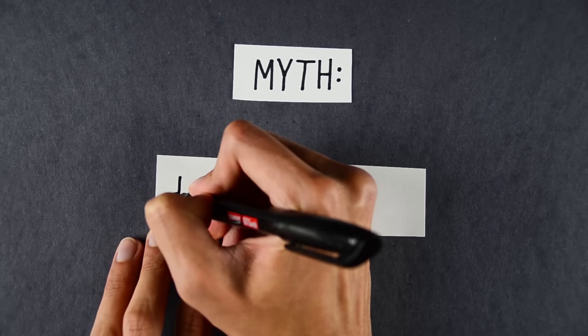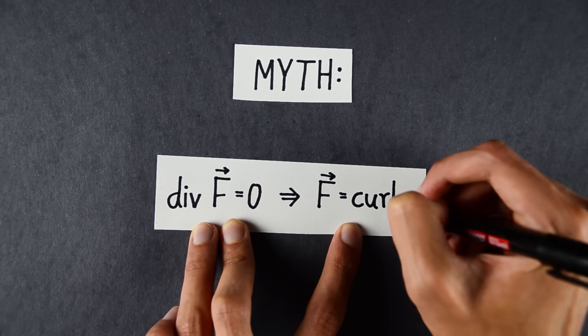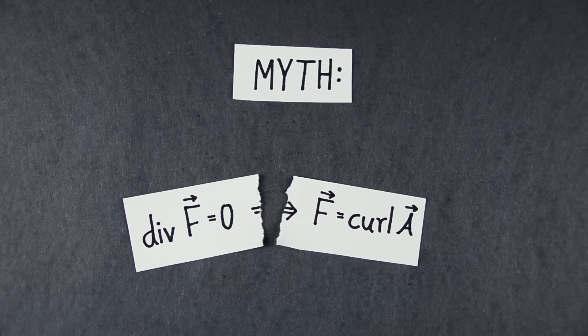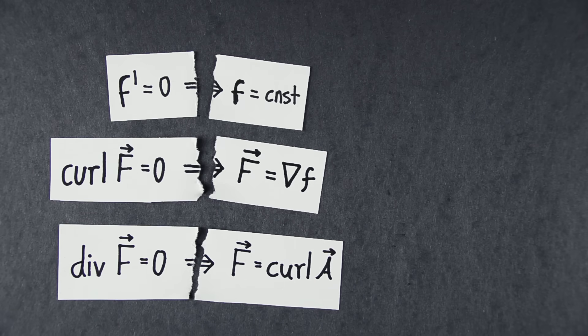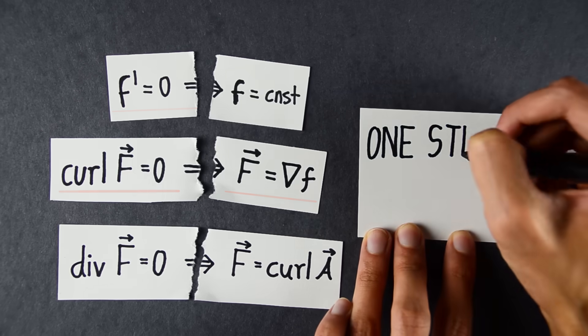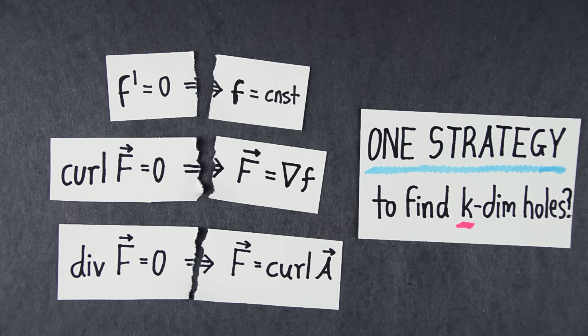There's also an analogous test for finding two-dimensional holes. So we have a test for finding two-dimensional holes, one-dimensional holes, and zero-dimensional holes. But these tests look so different. I mean, here we're dealing with functions, and here with vector fields. Here we're dealing with derivatives. Here with gradients. Here with curl. Is there one unified test to find k-dimensional holes?